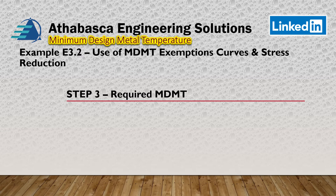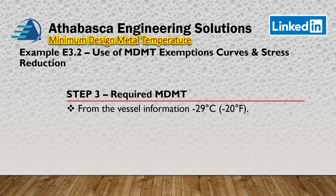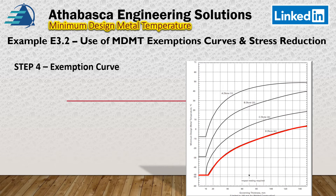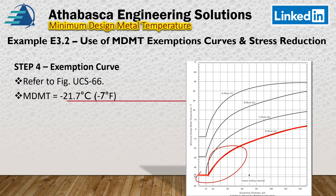In step three, we look at the required MDMT, which is given to us in the example. From the vessel information provided, the arbitrary MDMT is minus 29 degrees centigrade, which is a very common MDMT requirement for non-impact-tested carbon steel vessels. Going to step four, back to the exemption curve — using curve D from figure UCS-66, the MDMT we get is minus 21.7 degrees centigrade.